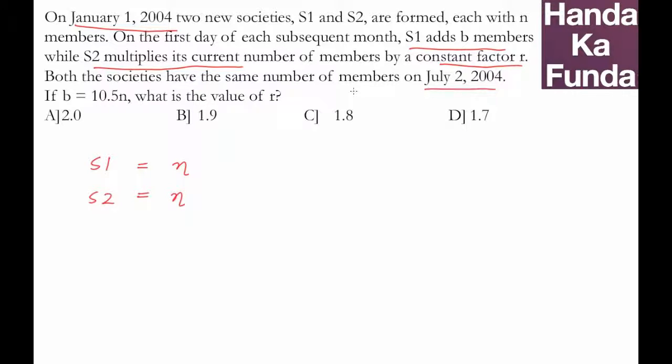From January 1st to July 2nd is a period of six months: February, March, April, May, June, July.